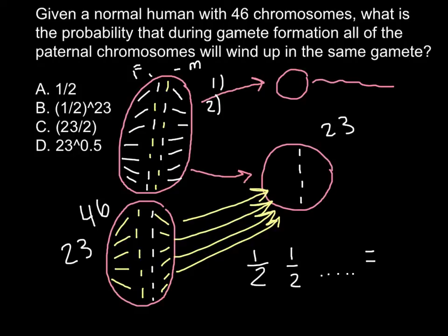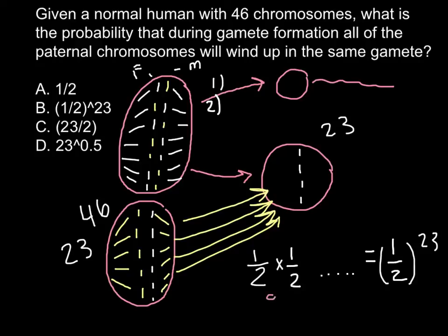So at the end we will have one half raised to the 23rd power. We have to use the multiplication sign, applying the rule of multiplication every time we have independent probabilities — for example, the probability for the first chromosome to be derived from the father's side, and the second, and so on.